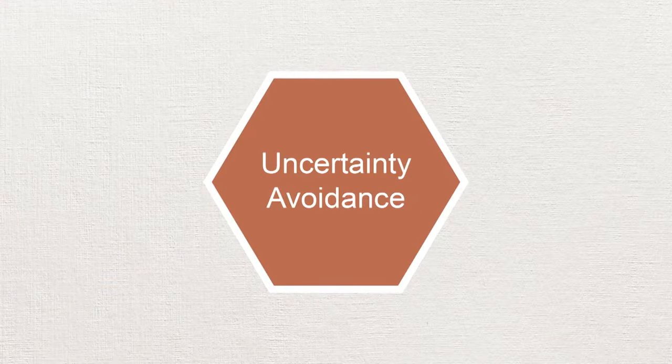Let's take a look at the dimension called uncertainty avoidance. According to Hofstede, this describes the extent to which people within a culture are made nervous by situations which they perceive as unstructured, unclear, or unpredictable — situations which they therefore try to avoid by maintaining strict codes of behaviour and a belief in absolute truths. Uncertainty avoidance should not be considered the same as risk avoidance. This dimension considers a society's tolerance for ambiguity.